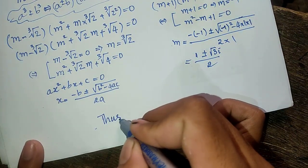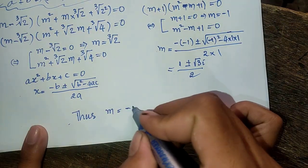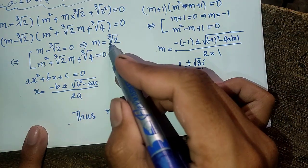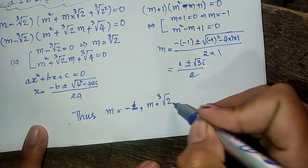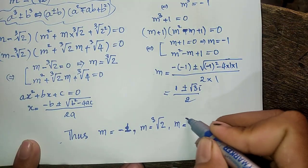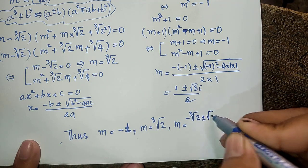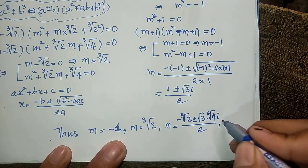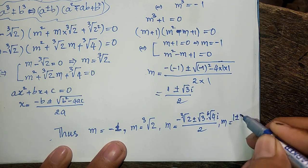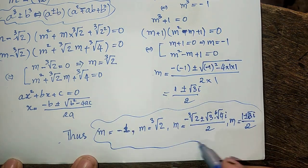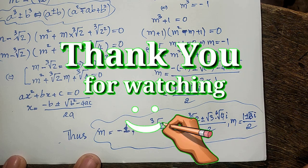So our final values of m are: m equals minus 1, m equals cube root of 2, m equals minus cube root of 2 plus or minus square root of 3 i divided by 2, and m equals 1 plus or minus square root of 3 i divided by 2. That is our answer. Thank you for watching — if you like my videos please don't forget to subscribe to my channel for more exciting videos. Goodbye.